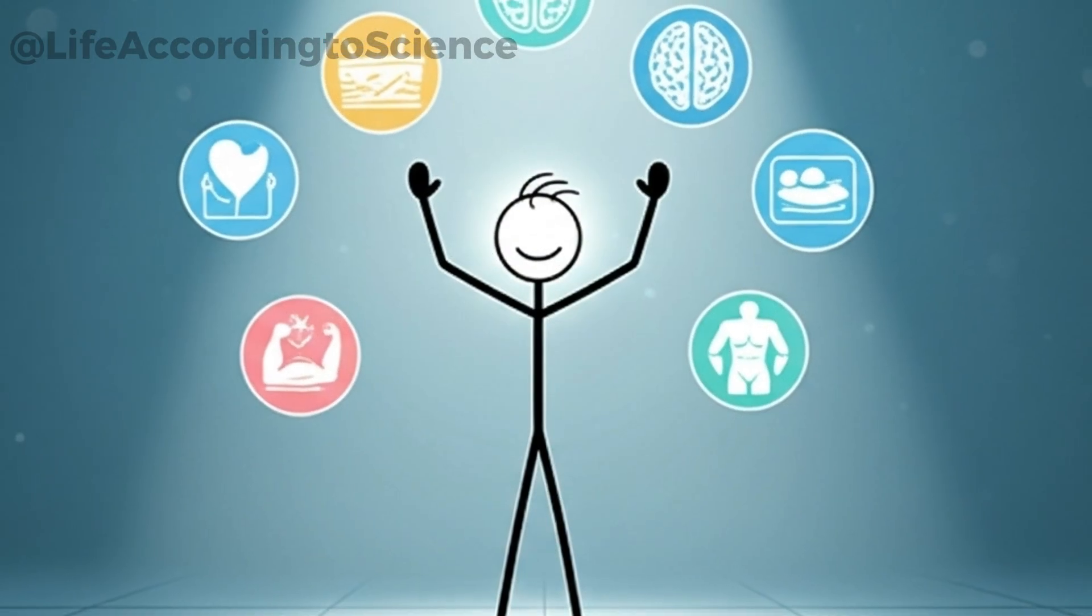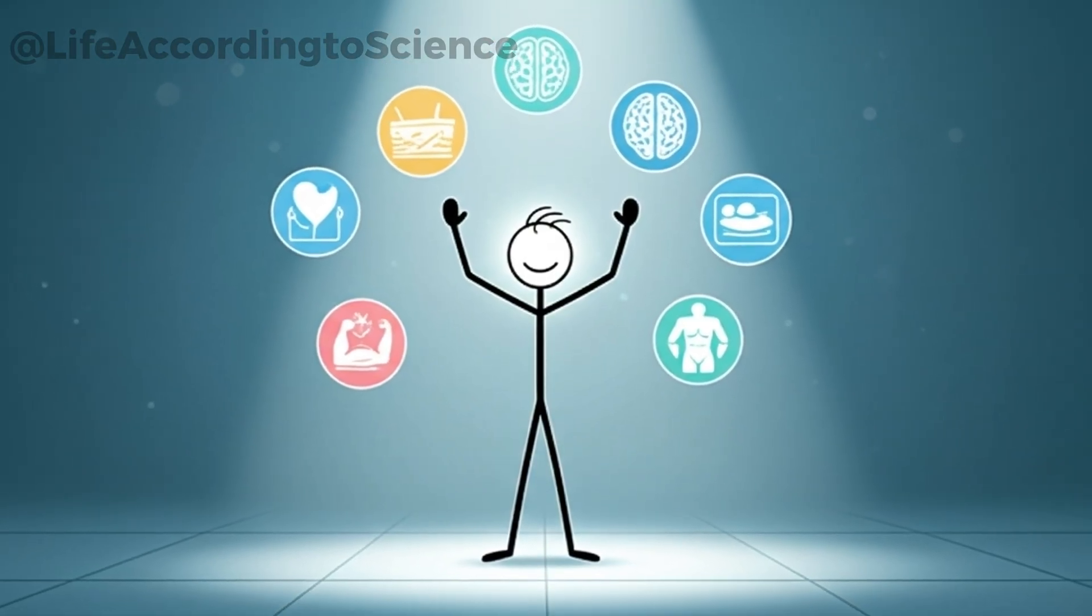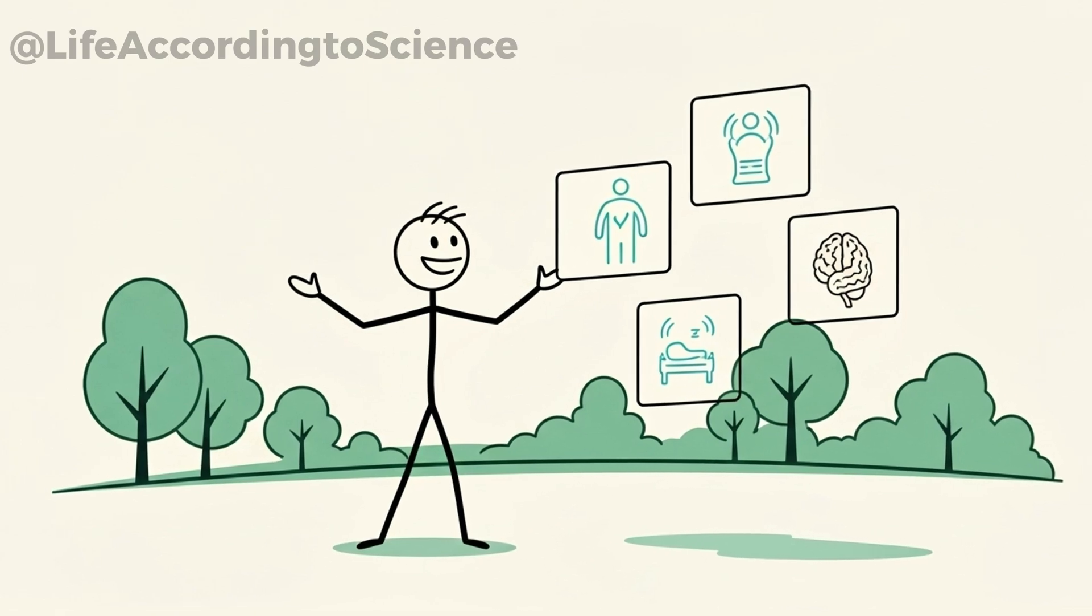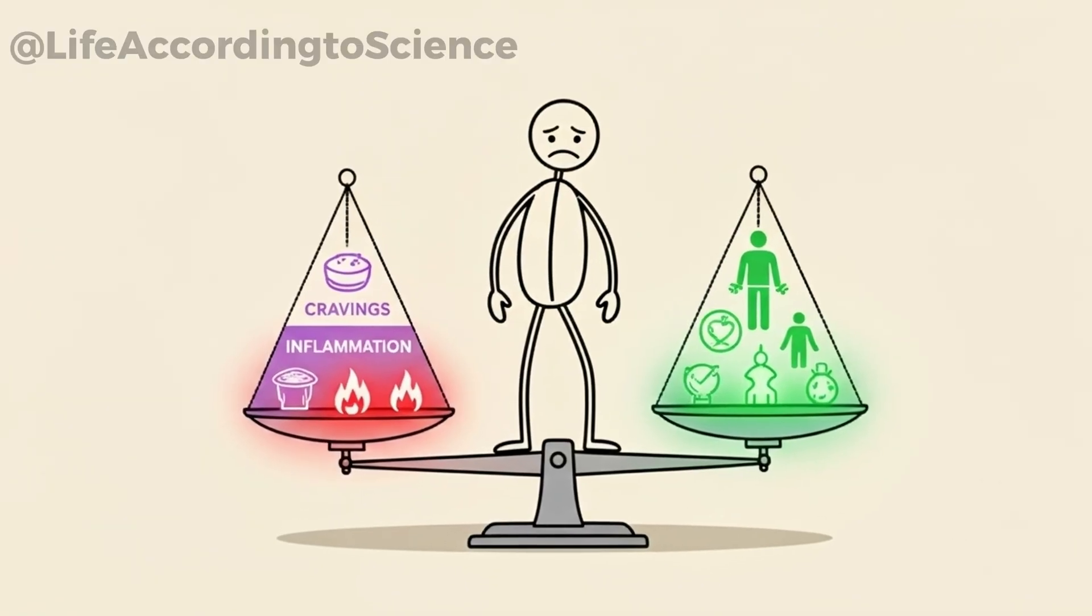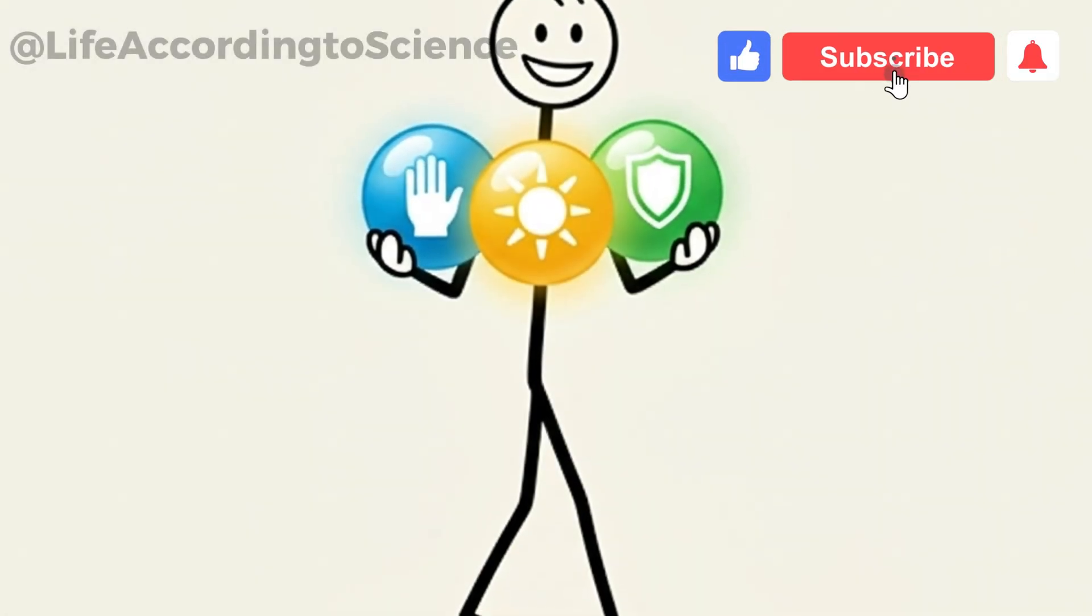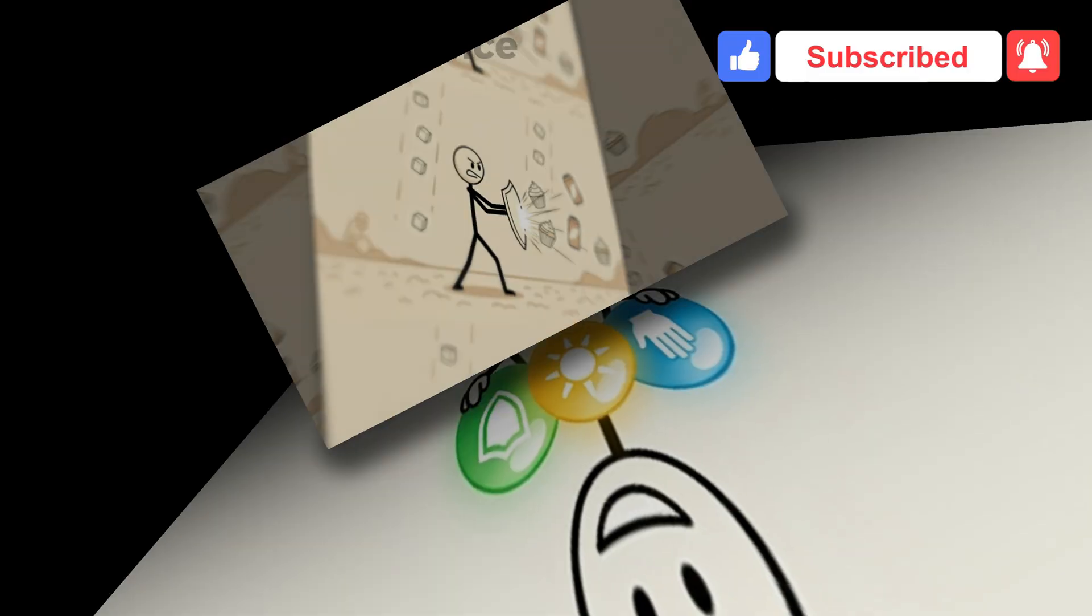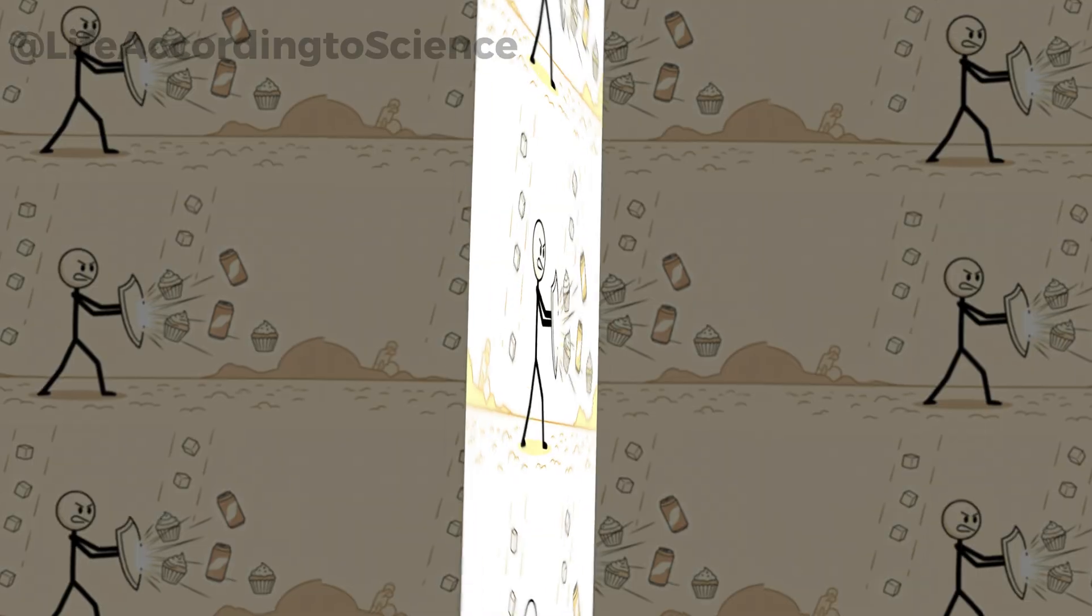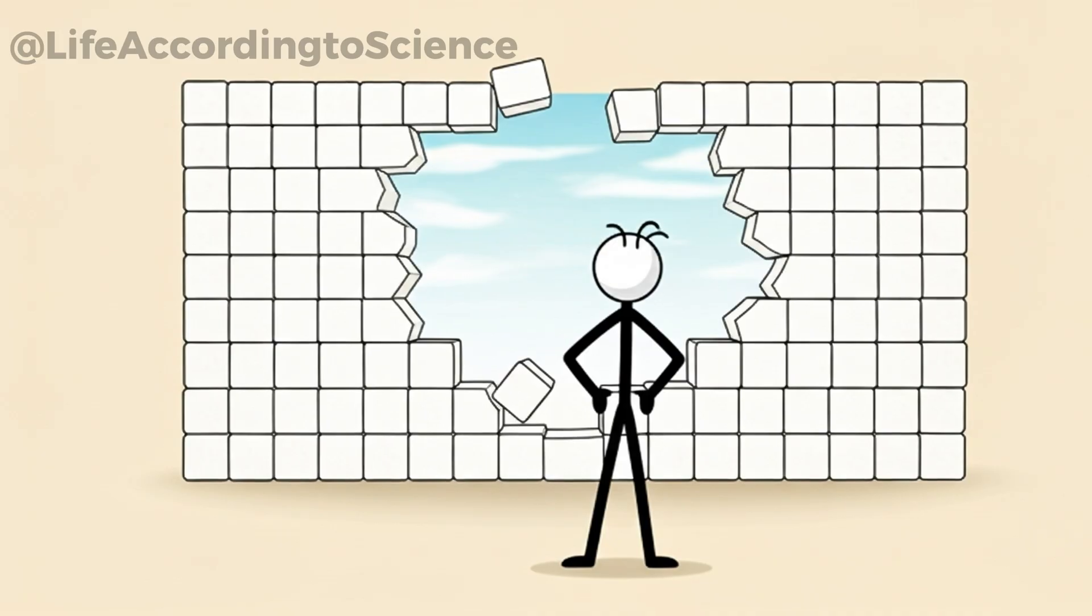After 30 days without sugar, the answer becomes crystal clear. Your body and mind function better without it. From clearer skin and steady energy to improved sleep and sharper focus, the benefits reach every corner of your life. It's not just about what you lose, weight, cravings, or inflammation, but about what you gain. Control, vitality, and resilience. Of course, the journey isn't always smooth. The first week feels like a battlefield, with cravings and withdrawal testing your willpower. But by the end of the month, most people look back and wonder why they ever needed sugar so desperately in the first place.